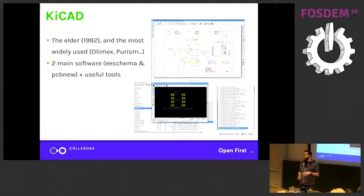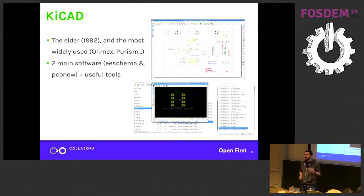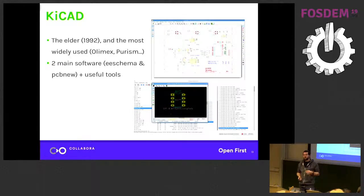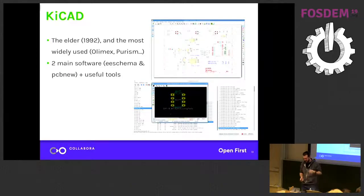KiCAD is not as integrated as Fritzing. You have two main software tools that are fairly independent: eSchema for schematic capture and PCBnew for the PCB router. It also includes lots of useful tools such as a PCB calculator with many functionalities — for instance, it lets you calculate the heat elevation of a track depending on its width, length, and the current passing through it, and other really useful stuff that are a great help in the design stage.